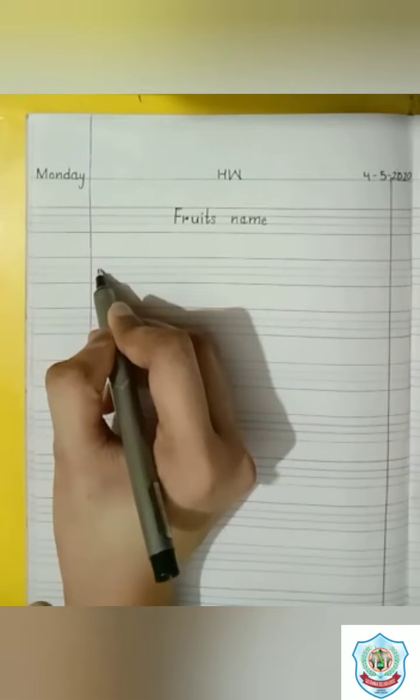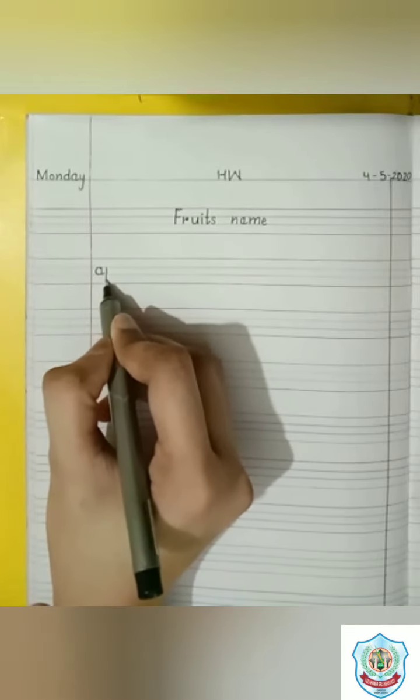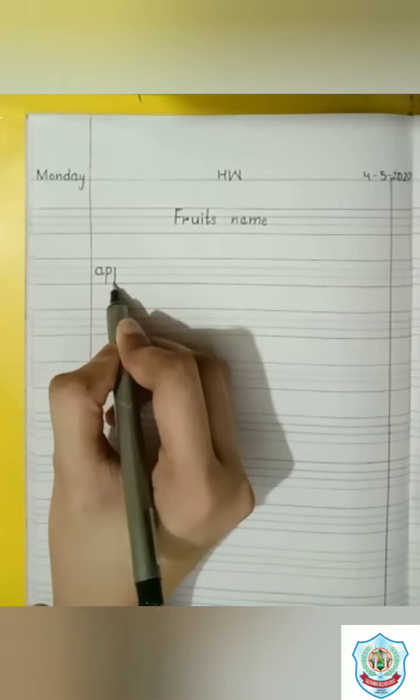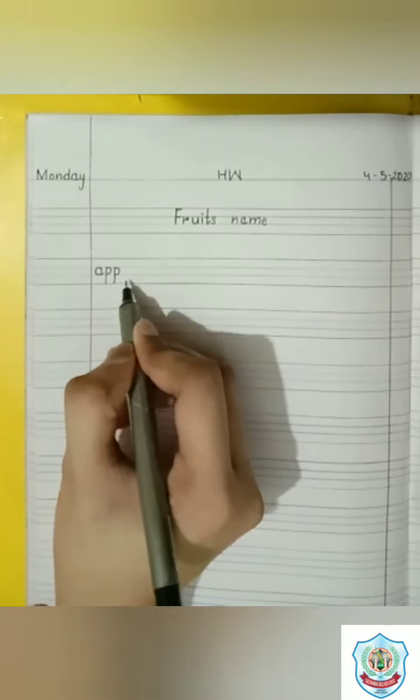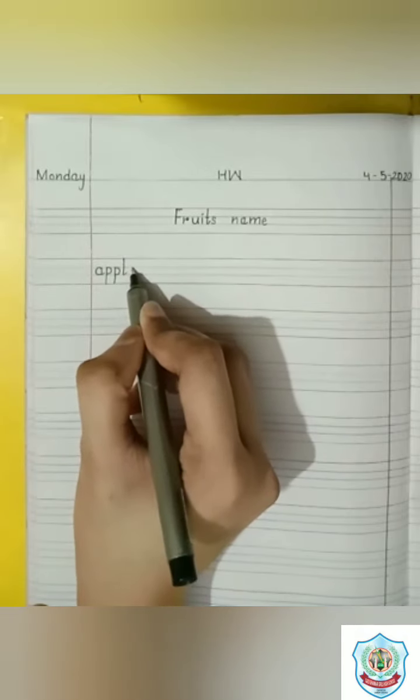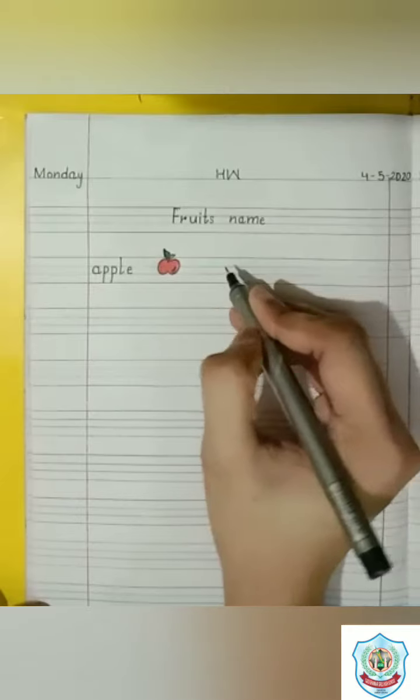Firstly, I will write here apple. A has a sound A. Double P makes a sound P. And L, E makes a sound L. Apple. A, double P, L, E. Apple. This is a picture of apple.